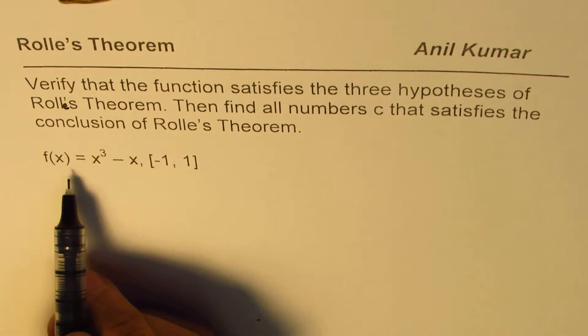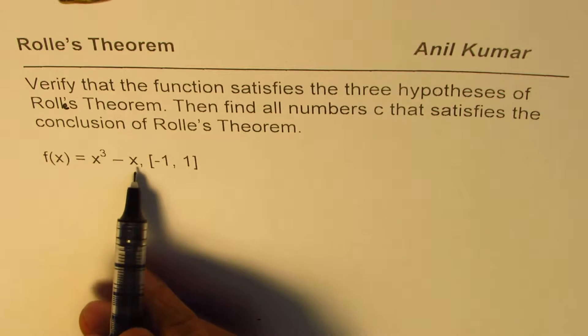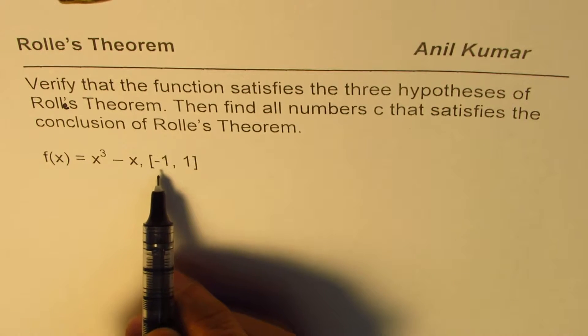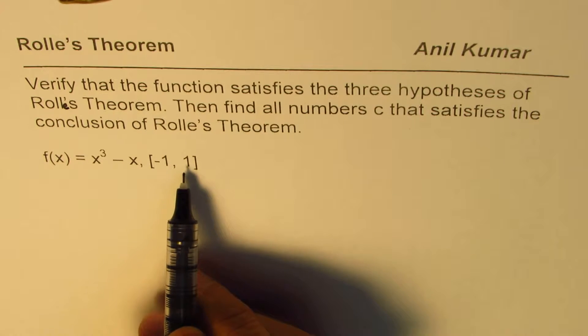The function here is f(x) = x³ - x and the closed interval given to us is [-1, 1].